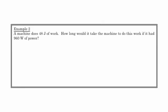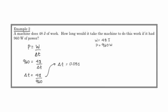Here's example two. Some machine does 48 joules of work. How long would it take the machine to do this work if it had 960 watts of power? This is just the same formula. But now what we're going to do is we're going to solve for something different. We're going to solve for time. So power is equal to work over time. And we sub in our numbers and rearrange. And we come up with 0.05 seconds is the amount of time that it would take this machine to do this work.